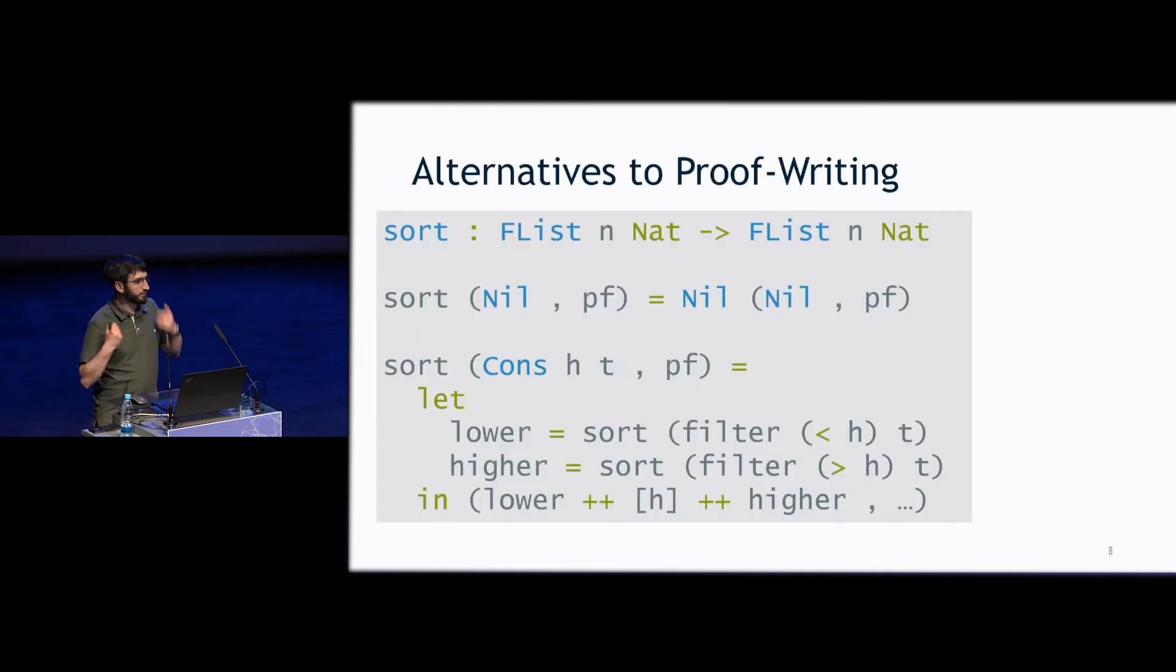So instead of having them try to write this proof and fail, what are some alternatives? So if you've used Agda or Idris, you'd say, well, we'll just put a hole in and we'll keep working. But the problem with that is now we can't run this code. This code, the compiler views the code as incomplete, and you can't compile it.